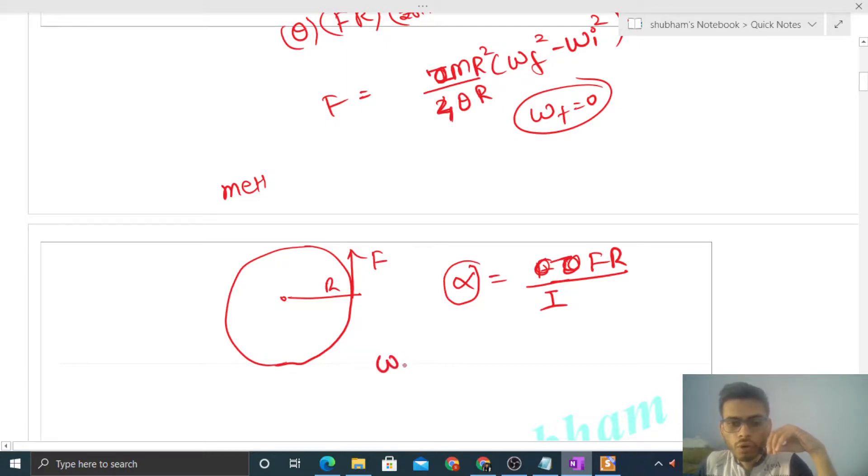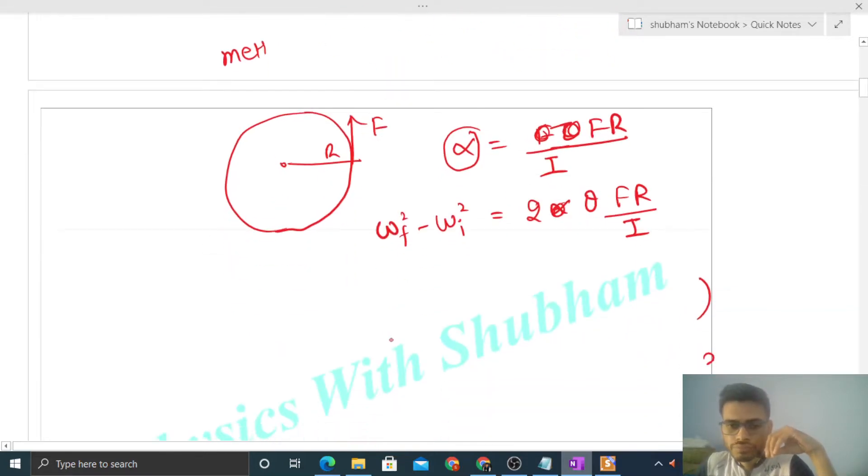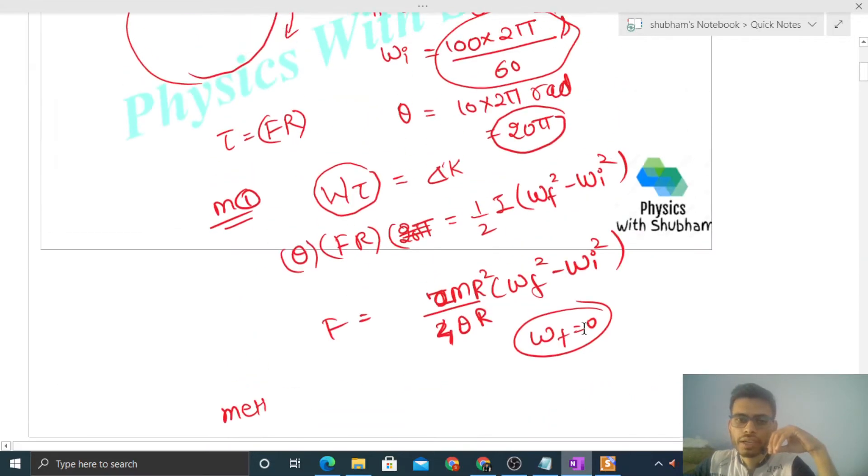Now you can use this equation: omega final square minus initial omega square equals 2 into alpha into theta. Now alpha's value, you can put FR upon I. So from here also same equation comes. F's value: find out I upon 2 theta R into omega final square minus initial omega square. Again you are getting the same equation.